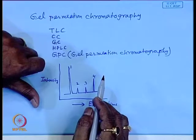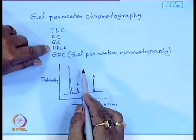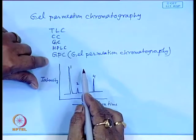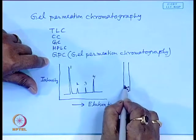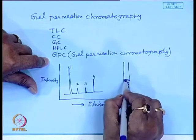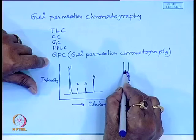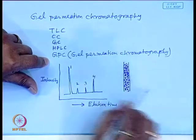A gel permeation chromatography instrument contains a column packed with porous beads of small particle size. These porous beads are made of cross-linked polystyrene. Cross-linked polystyrene beads are used as the packing material in GPC. The principle difference between GPC and HPLC is only the column packing material — GPC uses porous spherical beads.